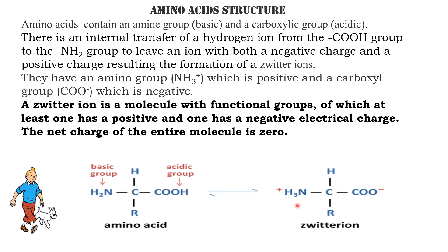In amino acids, the COOH group and NH2 group exist as NH3+ and COO– respectively. That means there is no free COOH group and no free NH2 group. Instead of NH2, we have NH3+, and instead of COOH we have COO–. This means amino acids undergo internal rearrangement: an internal transfer of a hydrogen ion from the COOH group to the NH2 group, so the COOH becomes COO– and the NH2 becomes NH3+.